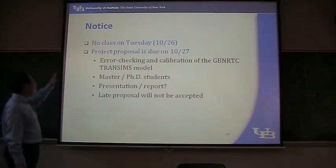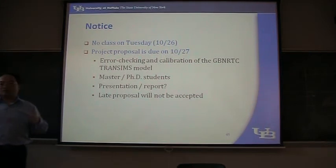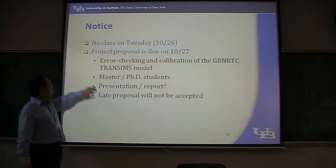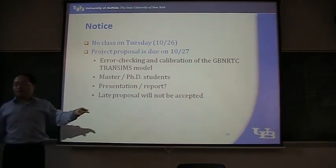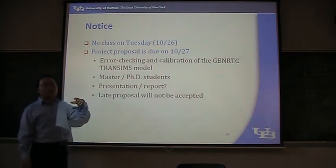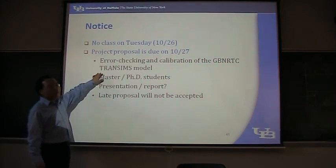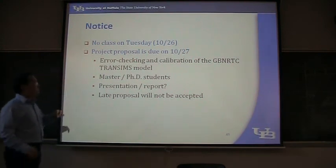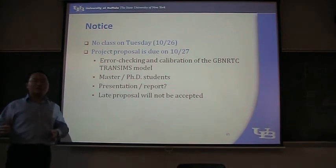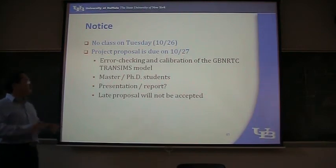Here's a strict thing: first of all, we have no class on Tuesday because there is a meeting I have to attend. On Wednesday, the project proposal is due. Late proposals will not be accepted. If you don't submit your proposal on Wednesday, I will assume you have no proposal and no project. Then you probably want to do the default project — it's called error checking and calibration of the GPRTC transit model. This model is a transit model of a big area consisting of the greater Buffalo Niagara area. There is already a model but it has some bugs, and you may want to find the bugs and calibrate it.